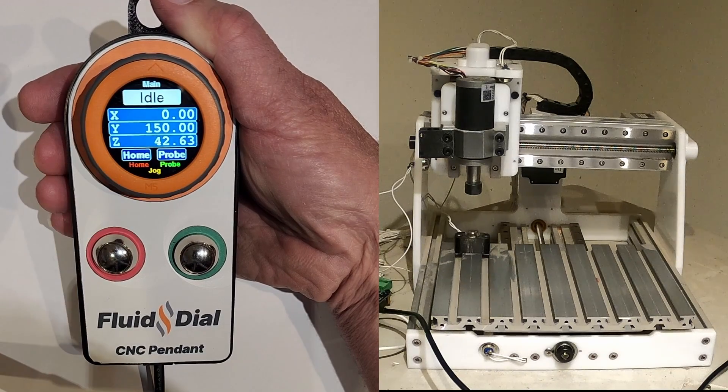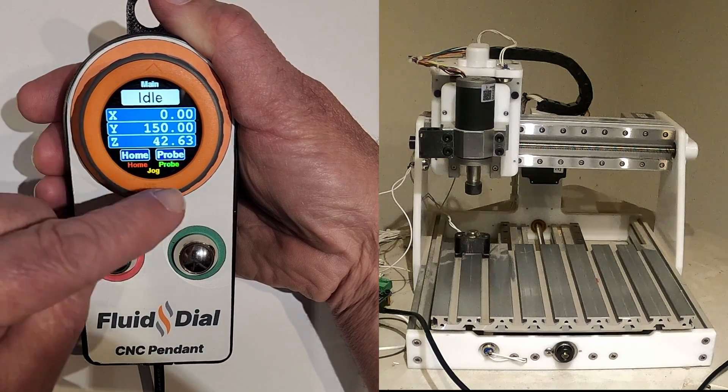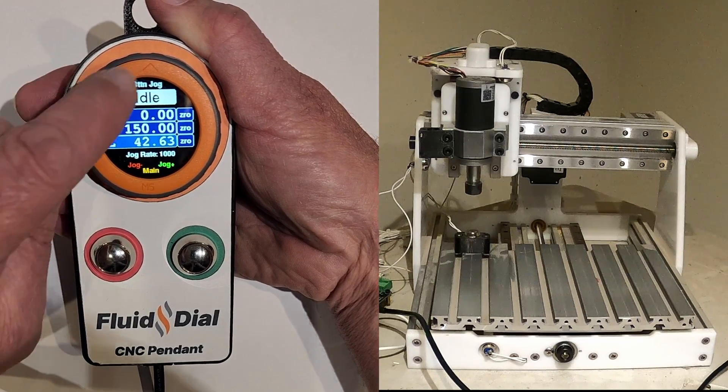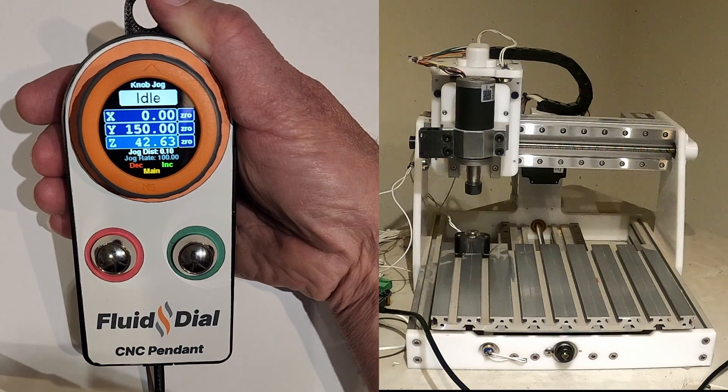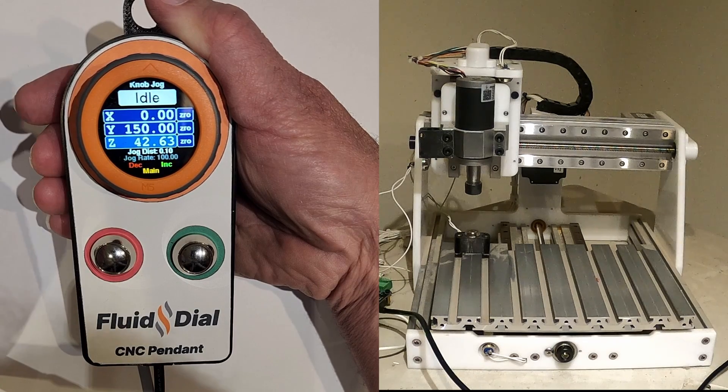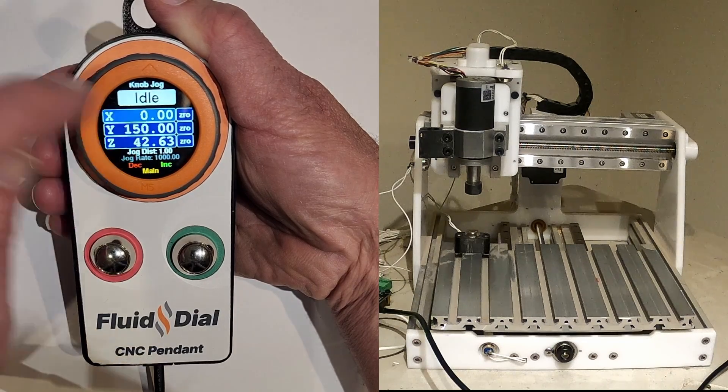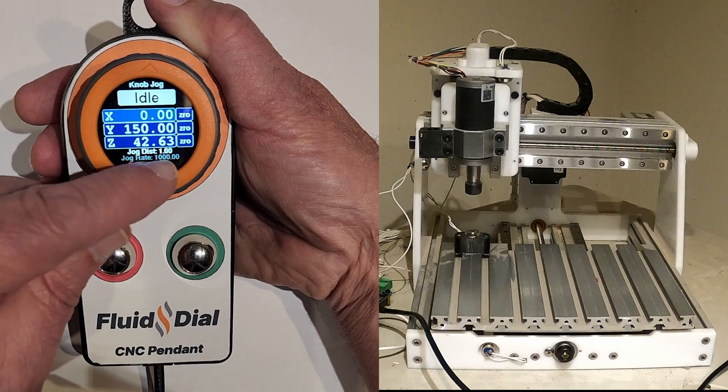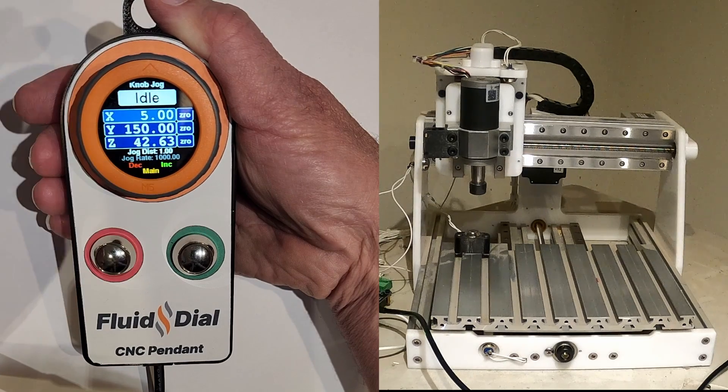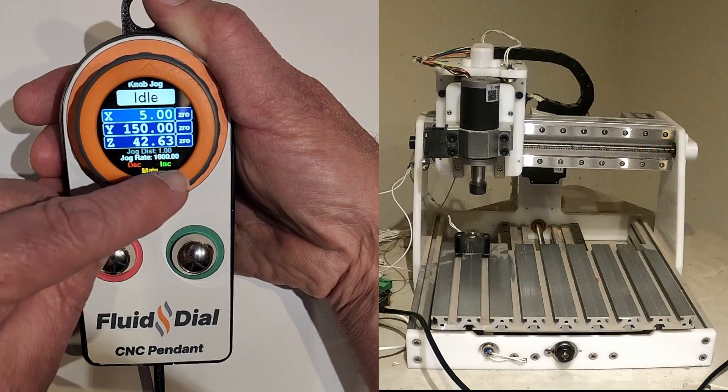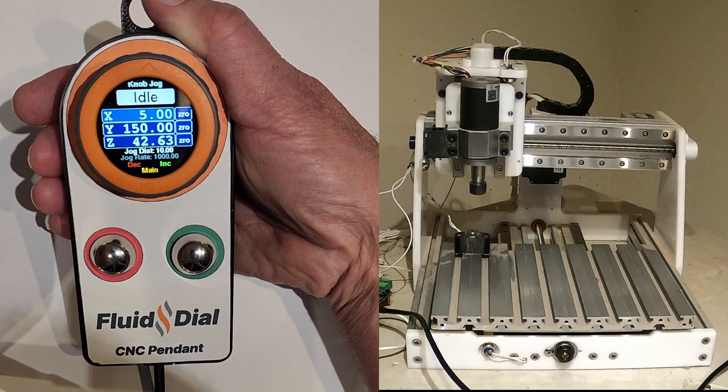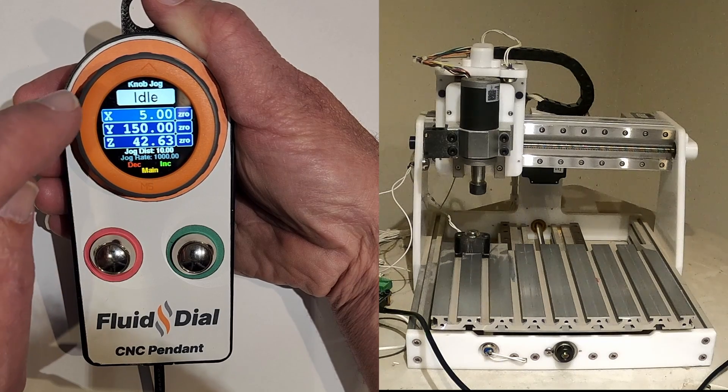Now I'll go back to the main menu and show off some of the jogging. Click the dial to go into jogging mode and there are two basic modes. Right now, I'm in knob jog. That means if I spin the knob, the machine will move in the direction I select. So now I have the x-axis selected. I have a jog distance of one millimeter. You can see just turning it moves it in one millimeter increments. I can change that by increment it. Now it's in 10 millimeter moves and the jog rate is 1,000 millimeters per minute.